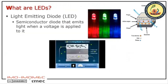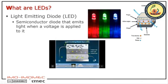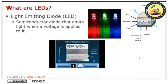Organic light emitting devices are not fundamentally different from the light emitting devices you all know — a semiconductor-type diode that emits light when you apply a voltage. You have a potential difference applied: positive charge on one side, negative on the other. Holes and electrons move to the active layer, they meet each other, form an exciton, and emit a photon — that's the basic working mechanism of a light emitting device.